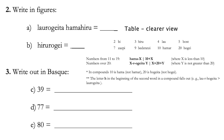Now let's move on to question 2a. From question 1 equation 11 we know that 'lau hogei ta' means 80. Following the pattern, we know that 'hamahiru' is 10 plus 3 — therefore the answer is 80 plus 13, which is 93. For 2b, we know that there are 'hiru' and 'hogei', which are 3 and 20. Using the same structure, we know that it is 3 times 20, which is 60.